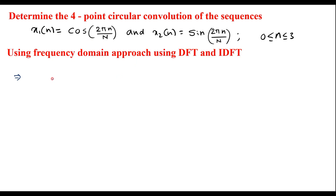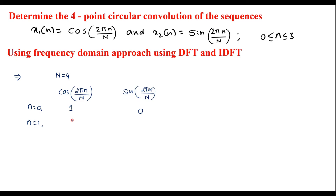We simplify for different values of n, with N equal to 4. We have cos(2π n/N) and sin(2π n/N). For n=0, substituting into the equation with N=4, we get 1 for cosine and 0 for sine. For n=1, cosine gives 0 and sine gives 1. For n=2, cosine gives -1 and sine gives 0. Therefore, x1(n) = {1, 0, -1, 0}.